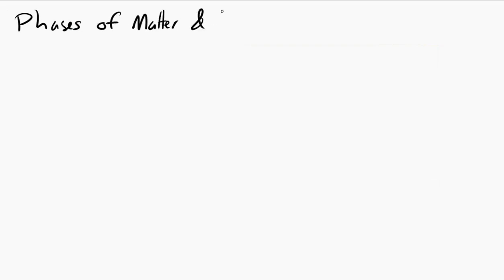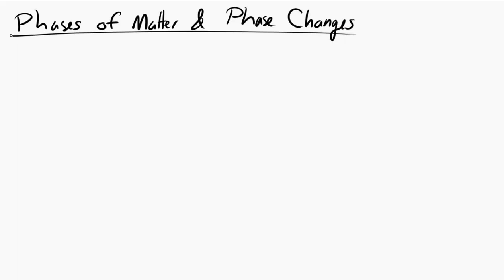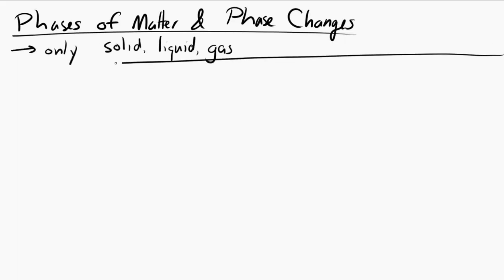Let's take a look at phases of matter and phase changes. We're going to restrict our conversation to the three common phases of matter: solid, liquid, and gas. We're not going to worry about plasma, Bose-Einstein condensate, degenerate matter, or all that cool stuff.